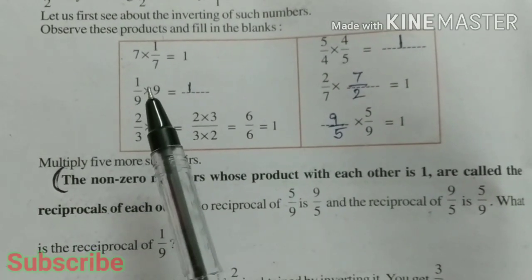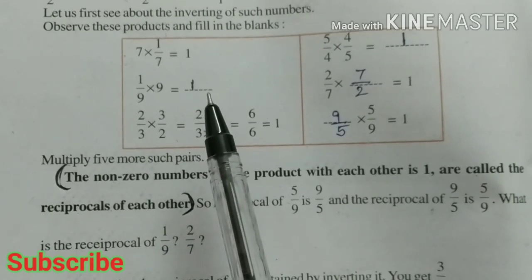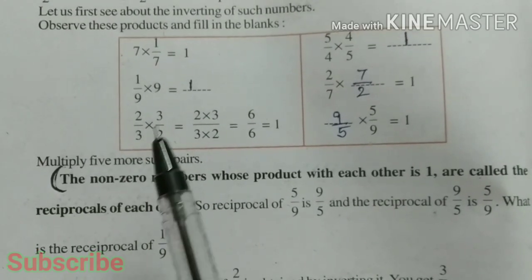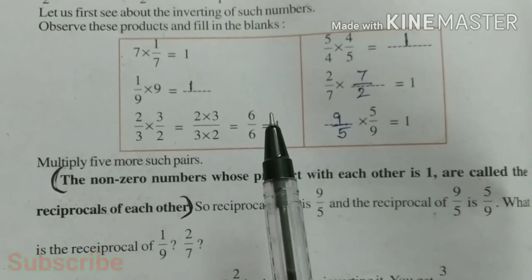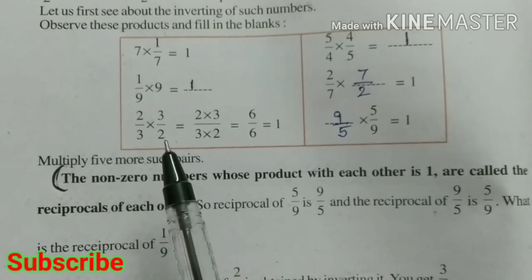Here you can see 1/9 × 9 = 1. 2/3 × 3/2 = 6/6 = 1. So these are reciprocals.